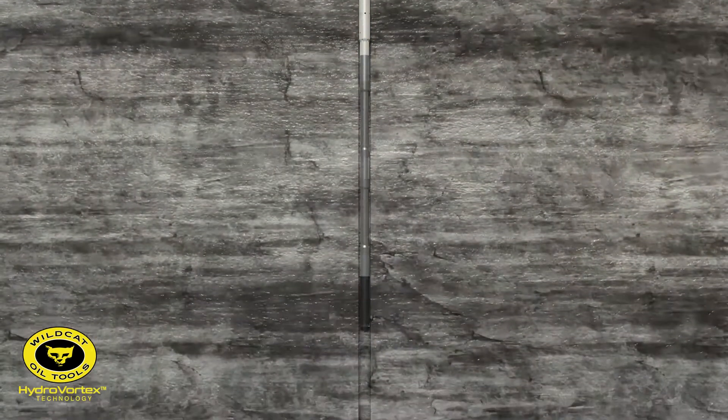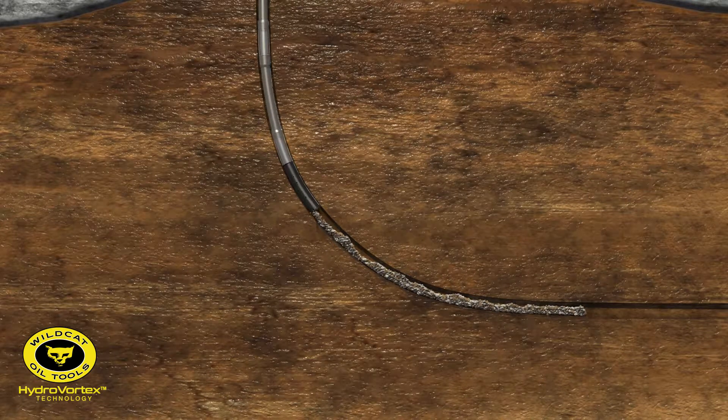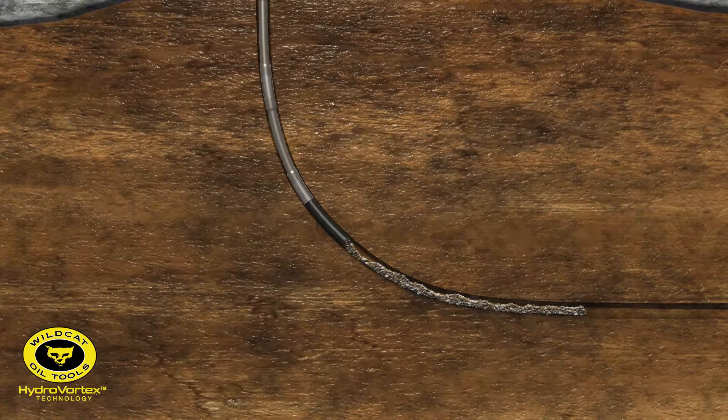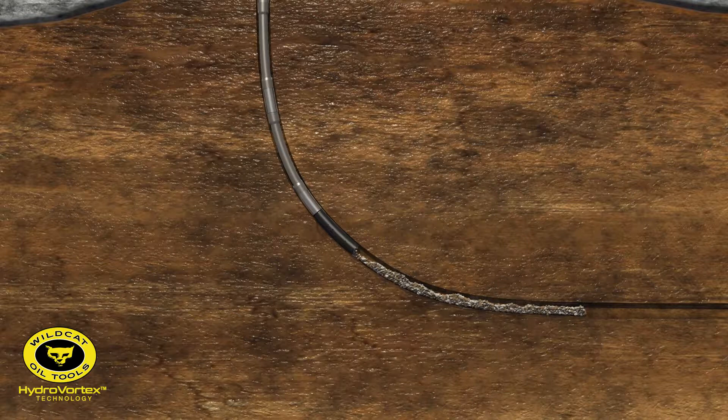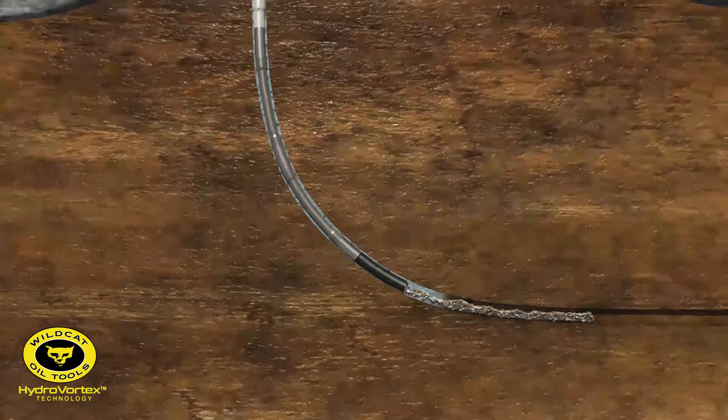The BHA is run into the wellbore and continues down the hole until debris obstructing the wellbore is encountered. Once the BHA stops, rotation starts, the pumps are turned on, and the HydroVortex begins vacuuming debris.